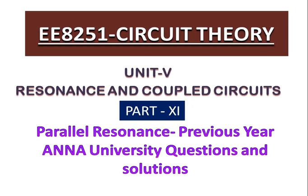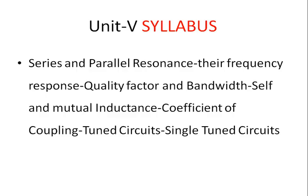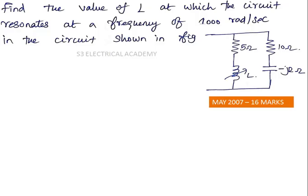This is the 11th part of resonance and coupled circuits, related to Anna University subject EE8251 Circuit Theory. In this video, on the concept of parallel resonance, we will discuss four questions asked in previous Anna University semester exams. Question number one: find the value of L at which the circuit resonates at a frequency of 1000 radians per second. This question was asked in May 2007 for 16 marks.